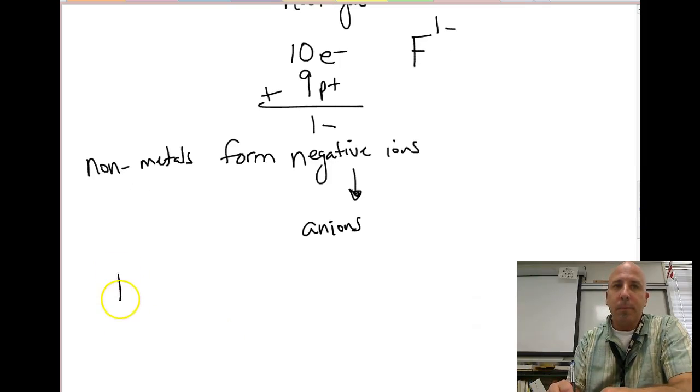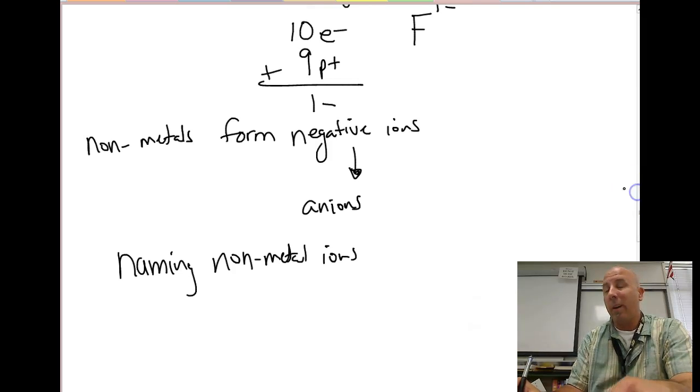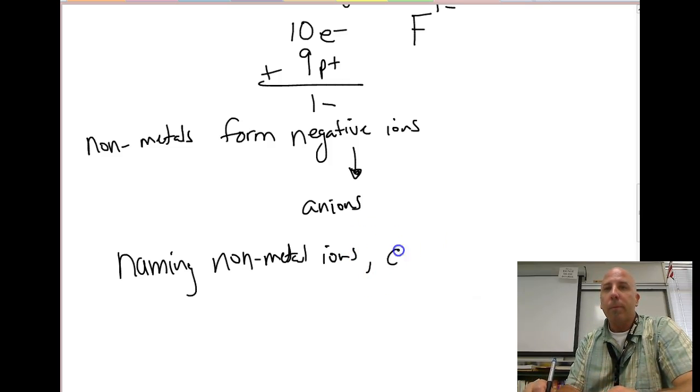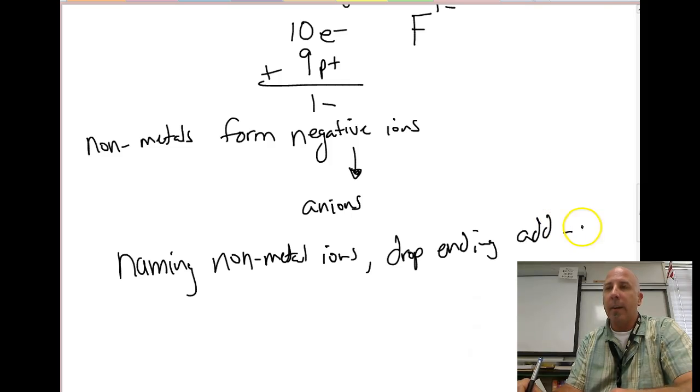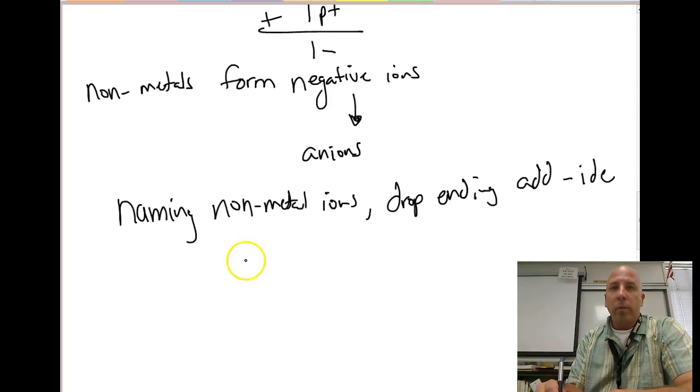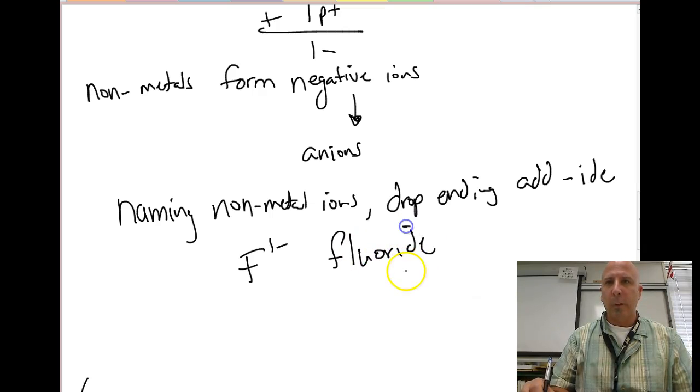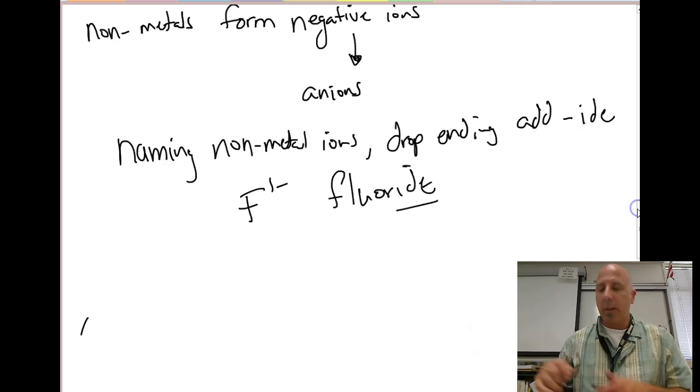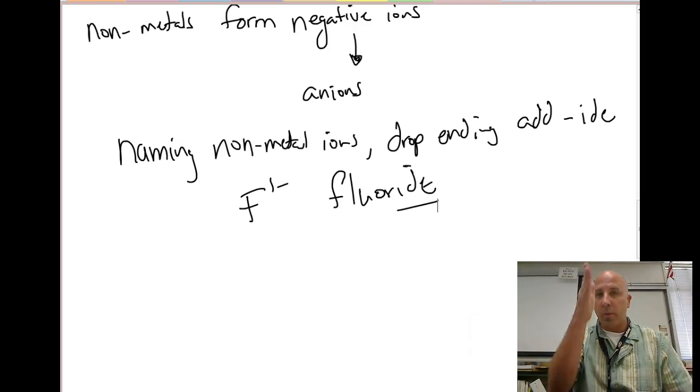When we're naming anions, or nonmetal ions, what we do is we have a different type of naming scheme. Remember the metals, we just added the word ion to the end of them. But on the nonmetals, what we have to do is we're going to drop the ending, drop the ending of the word, and then we're going to add the suffix -ide. So, fluorine becomes fluoride with the -ide ending instead of fluorine.